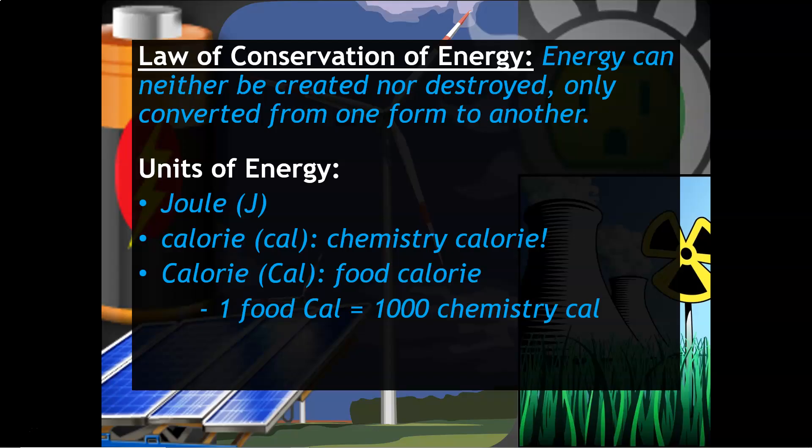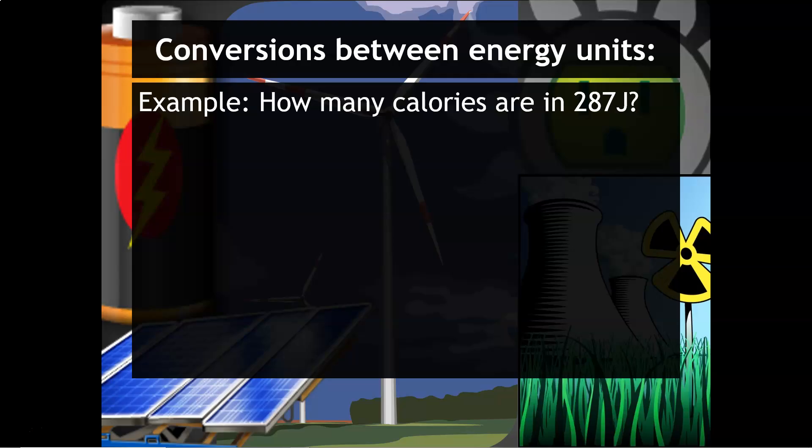Here's an example of the types of conversions that you will have to do in this unit with our units of energy. For example, it says how many calories are in 287 joules? I like to use the known and the unknown, so we're going from 287 joules to calories. We know that 4.18 joules equals one calorie, so we're going to have 4.18 on the bottom and then one calorie on top. Joules and joules will divide out and then we get our answer as 68.7 calories.